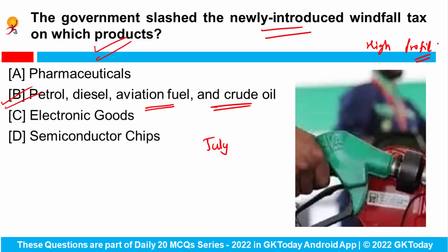The move is effective from the 27th of July. This will provide relief to top fuel exporters, for example Reliance Industries, and oil explorers like Oil and Natural Gas Corporation.